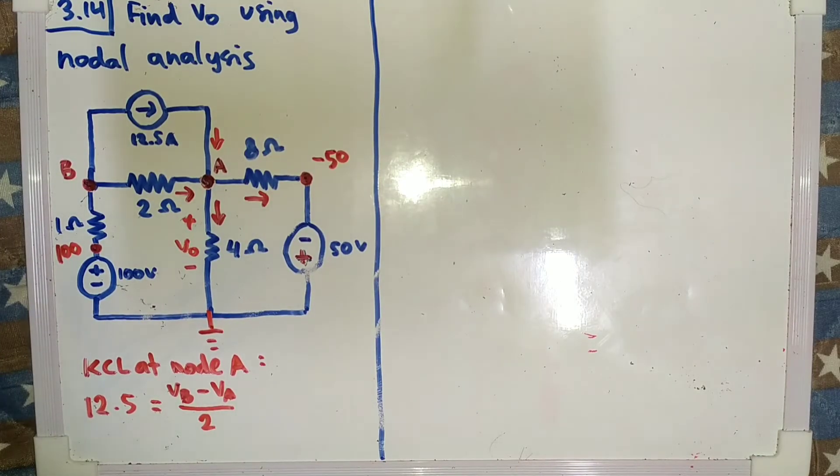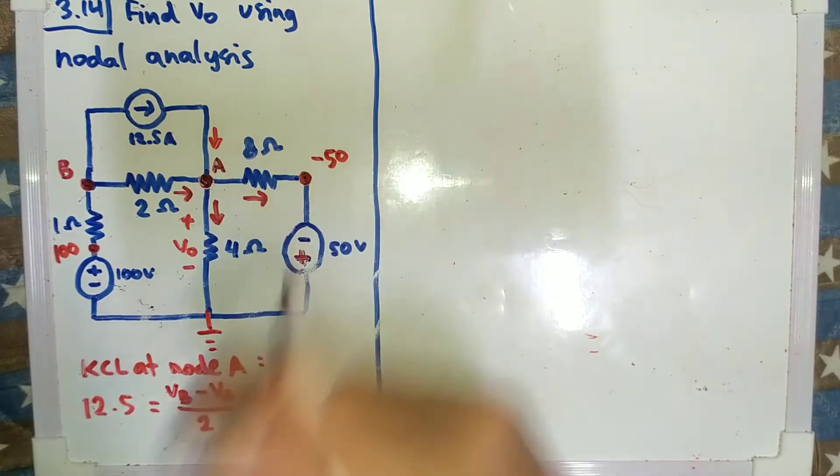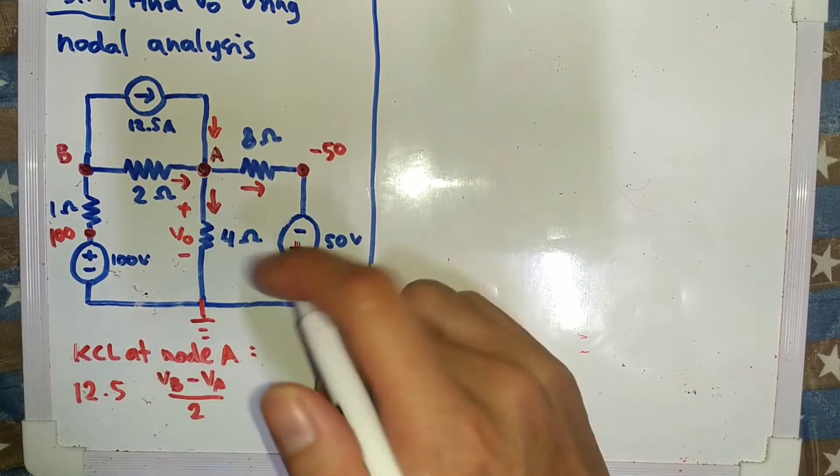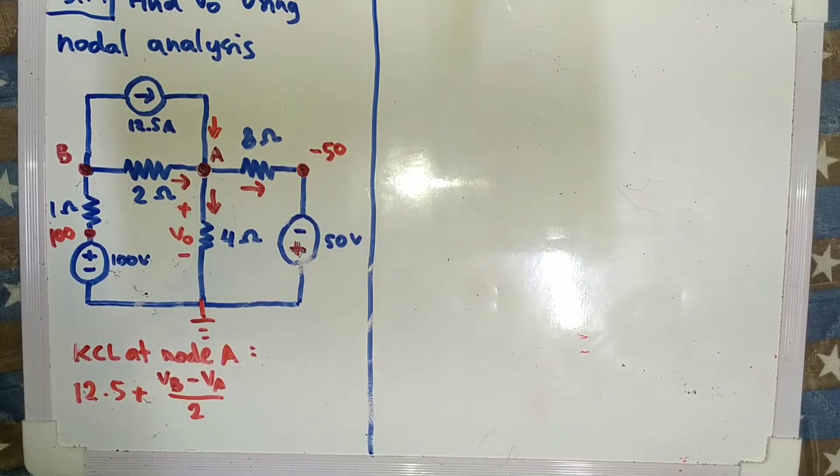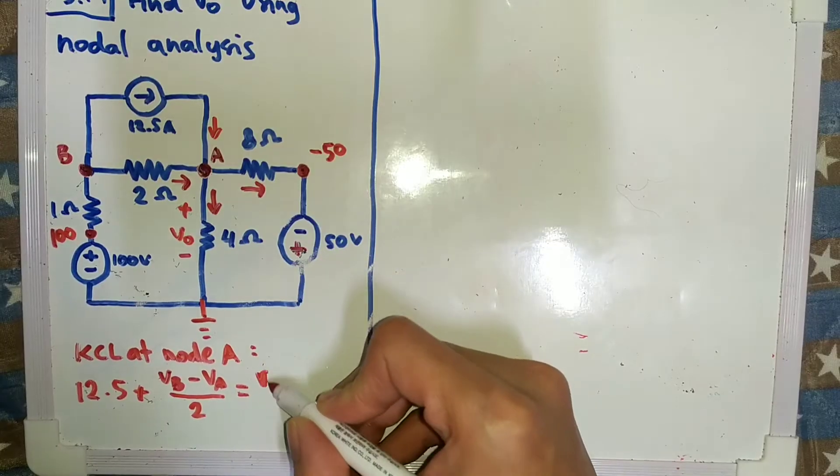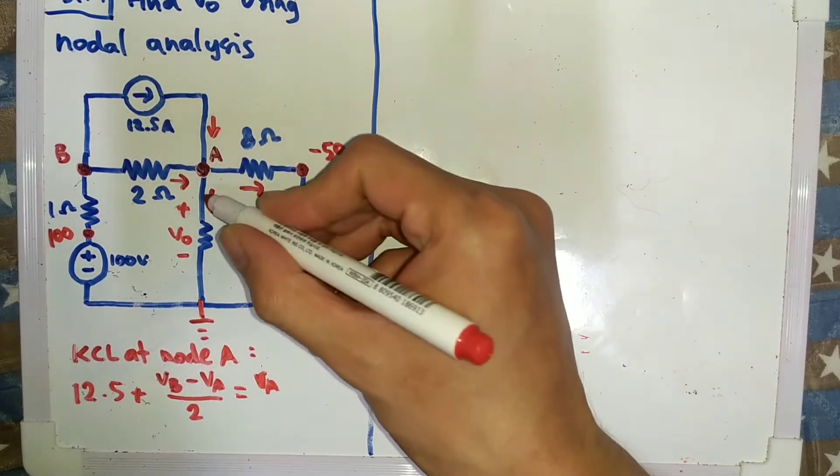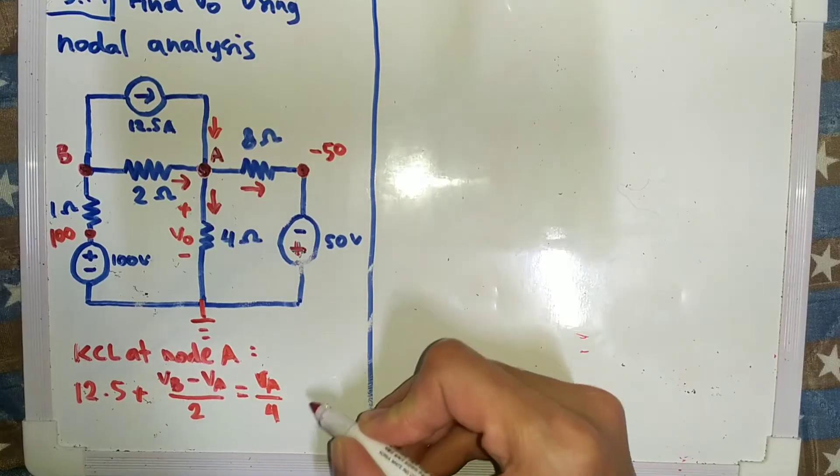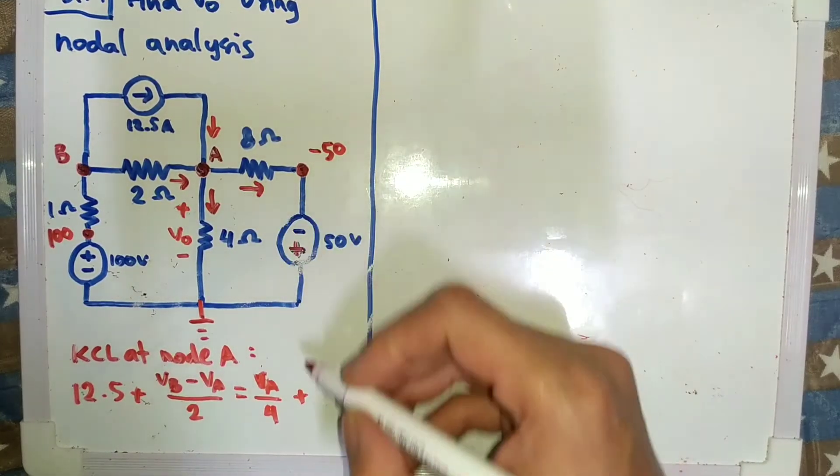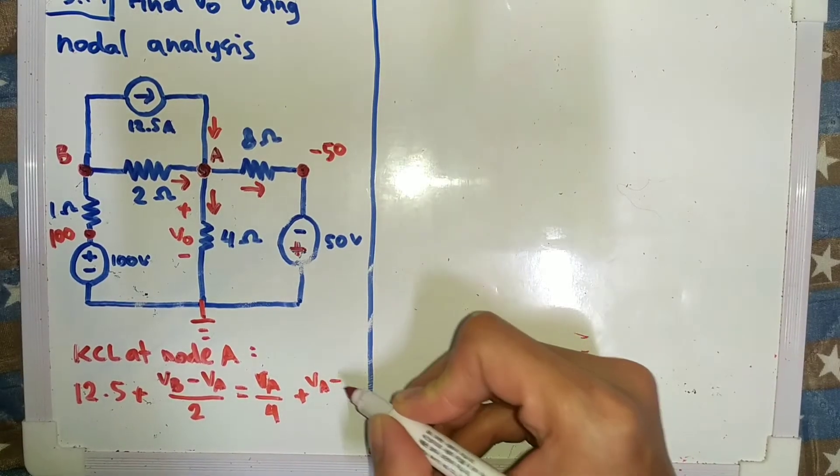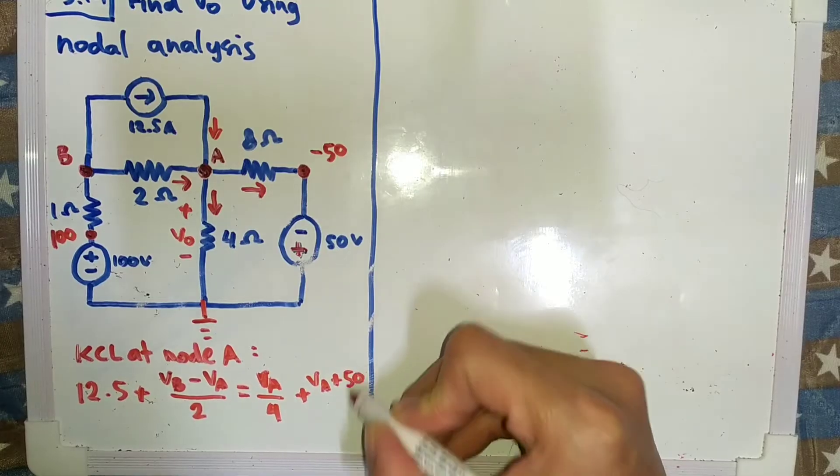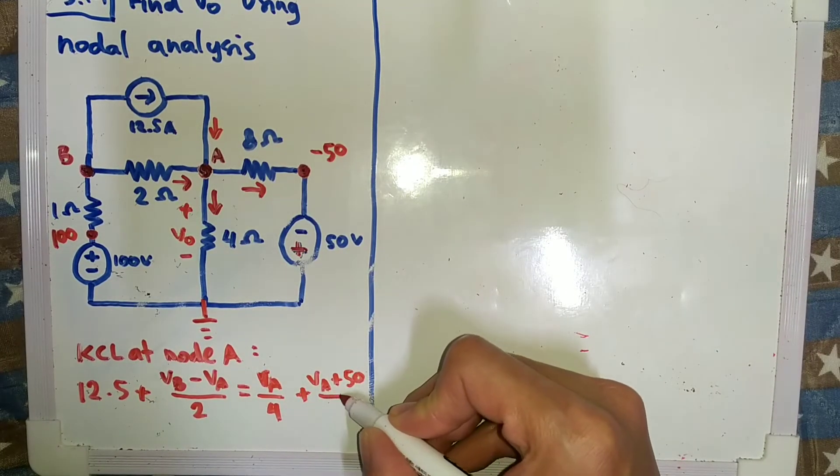And then current that goes out, VB minus VA over 4. So this one also goes in, so we plus it. And the current that goes out is VA, this one over 4, and then plus this one VA minus 50, that's become plus, and it's divided by 8.